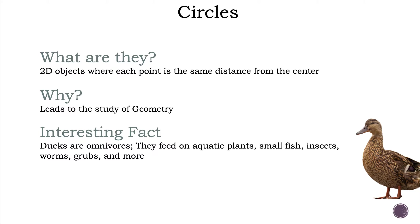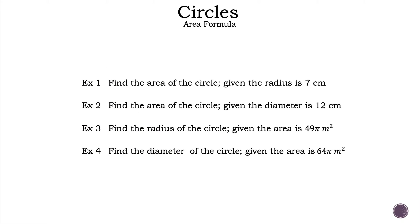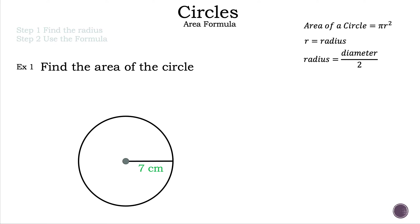Here are the examples we're going to be discussing in today's video. Let's take a closer look at example one. The steps are: step one, find the radius; step two, use the formula. Find the area of the circle. Before we begin, our first step is to write down the area formula for circles, and that formula is pi r squared.